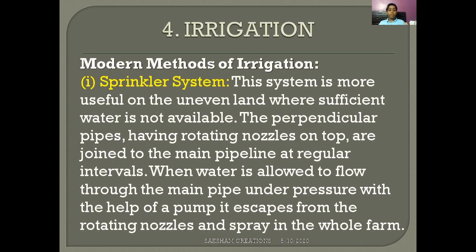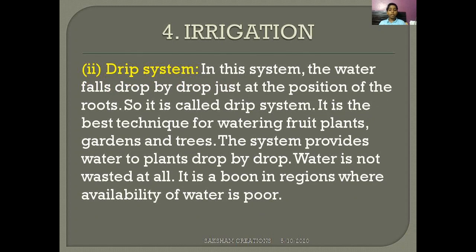Modern modes of irrigation include the sprinkler system. This system is more useful on uneven land where sufficient water is not available. Perpendicular pipes having rotating nozzles on top are joined to the main pipeline at regular intervals. When water is allowed to flow through the main pipe under pressure with the help of a pump, it escapes from the rotating nozzles and sprays over the whole farm.